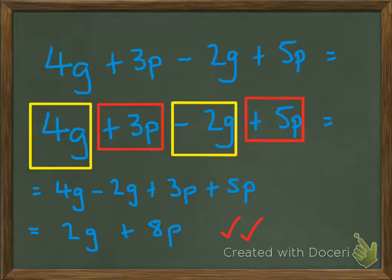Here's another one: 4g plus 3p minus 2g plus 5p. Again, just draw the boxes around the different letters, and that helps you keep them grouped. Here I've got the g's in yellow and the p's in red. You can see that my minus 2g is going to make an impact when I put my equation back together. So here I've got 4g minus 2g plus 3p plus 5p, which equals 2g plus 8p.